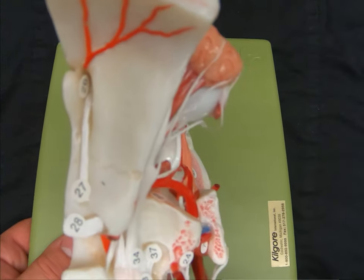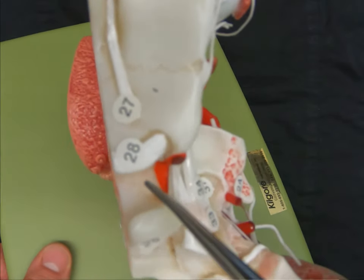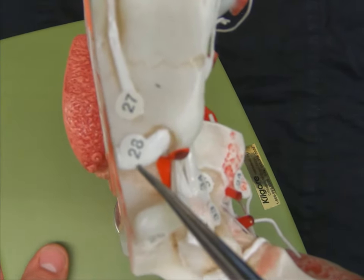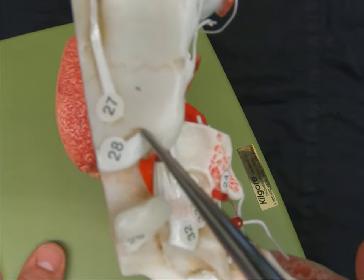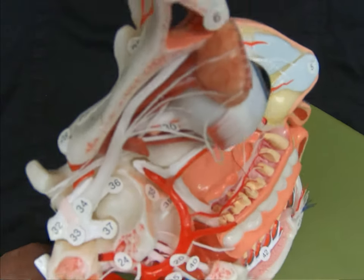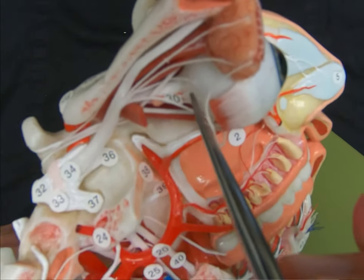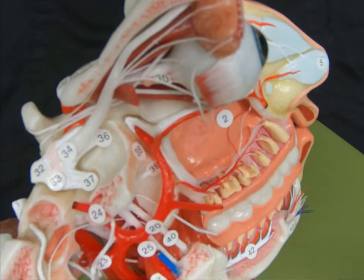Cranial nerve 2 also has a relatively straightforward path. We can see cranial nerve 2 here, represented by number 28 in this model, as it goes through the optic canal and then enters the orbit to run into the posterior aspect of the eye.